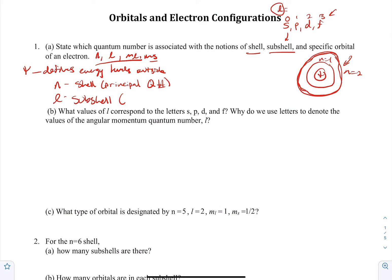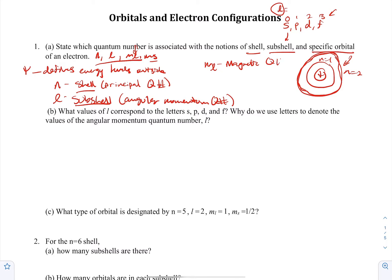We call L the angular momentum quantum number — you may also hear it called the azimuthal quantum number. For a specific orbital, it's going to be M sub L, the magnetic quantum number. We needed all three quantum numbers N, L, and M sub L to identify an orbital, and all four to identify an electron. M sub L technically designates the orientation of the orbital, since each orbital in a subshell has a different orientation.